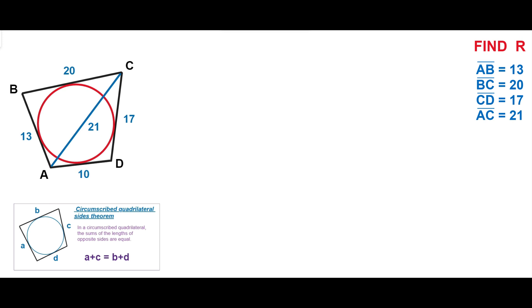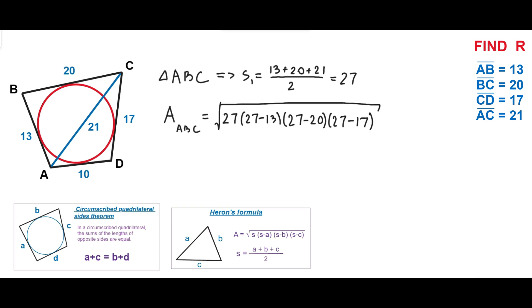Next, let's calculate the areas of triangles ABC and ACD using Heron's formula. Heron's formula is used for determining the area of a triangle where three sides are known. In this formula, S is the semiperimeter. For triangle ABC, the semiperimeter is (13 + 20 + 21) / 2 = 27. So the area of triangle ABC = √(27 × 14 × 7 × 6) = 126.